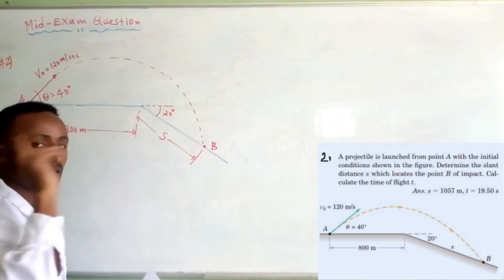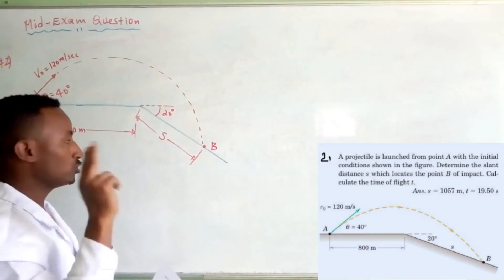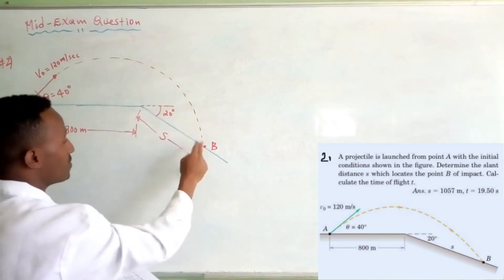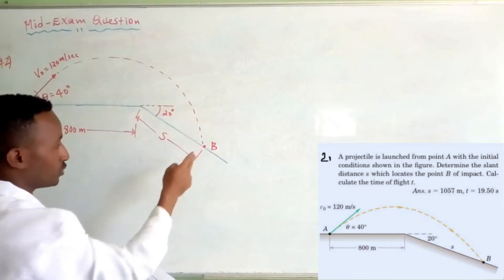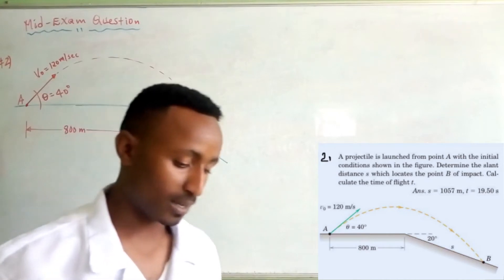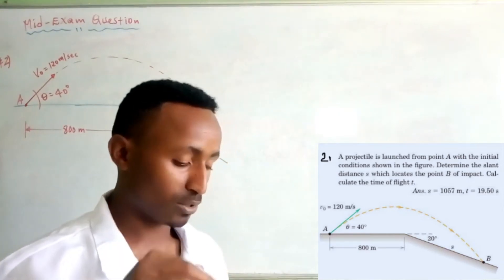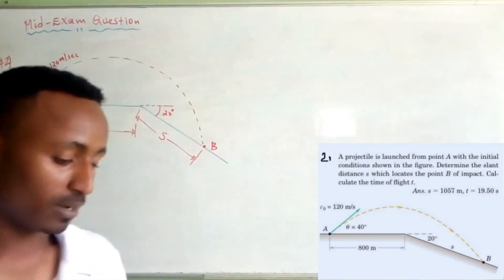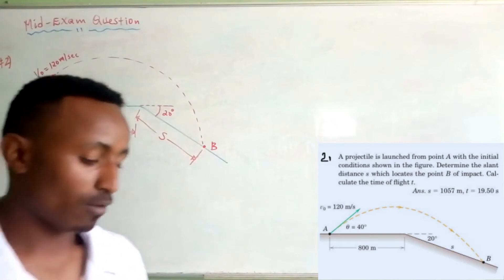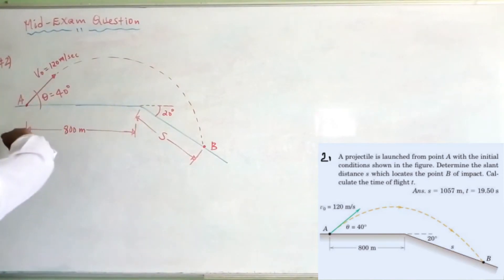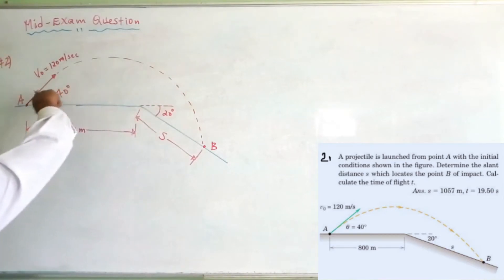The target point is the projectile's point of impact. We also need to find the time of flight, which is the total flight time from launch point A to impact point B.